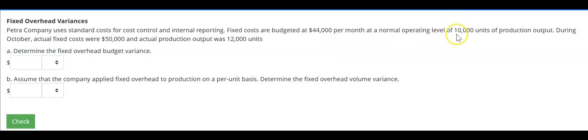Okay, so this $44,000 and this 10,000 units of production are our standard. During October, actual fixed costs were $50,000 and actual production output was 12,000 units.